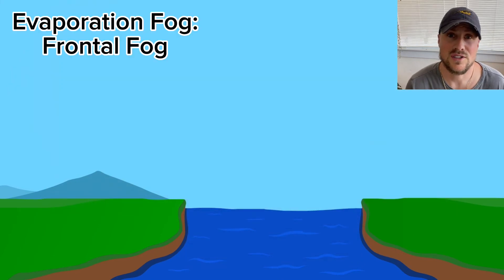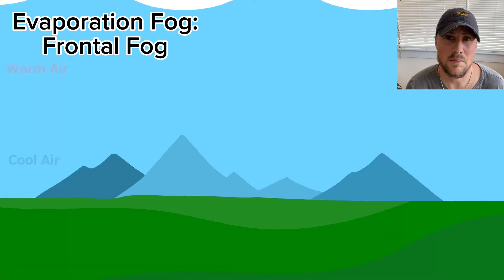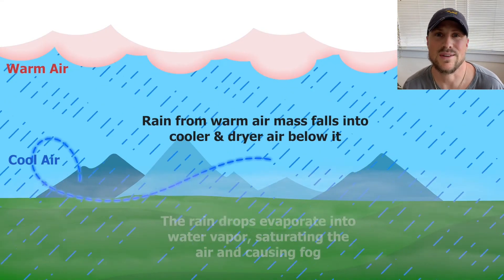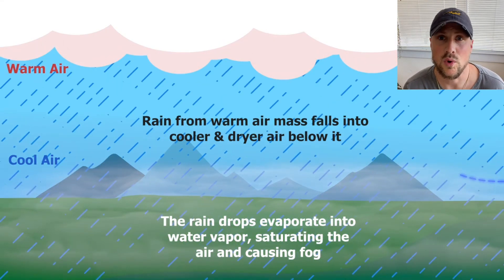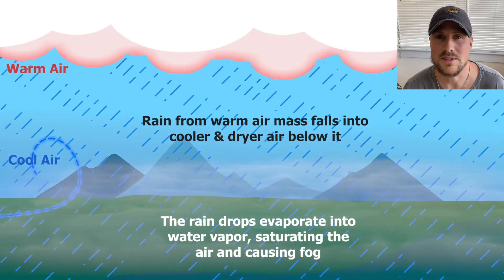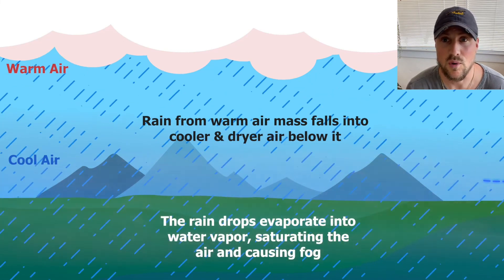Frontal fog, on the other hand, occurs in frontal zones when rain from warm air masses falls into cooler and drier air below it such that the raindrops evaporate into water vapor. When enough rainfall has evaporated at the lower levels, the air can become saturated and fog is formed.